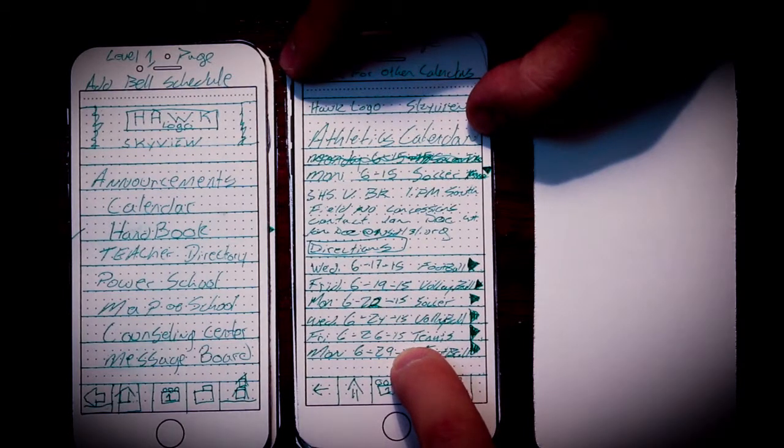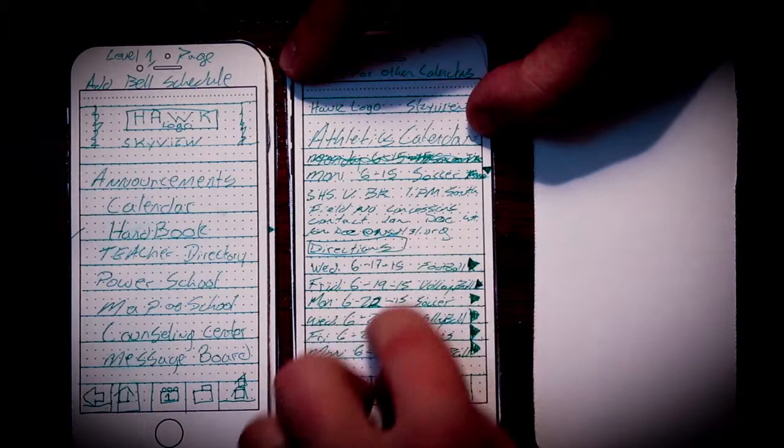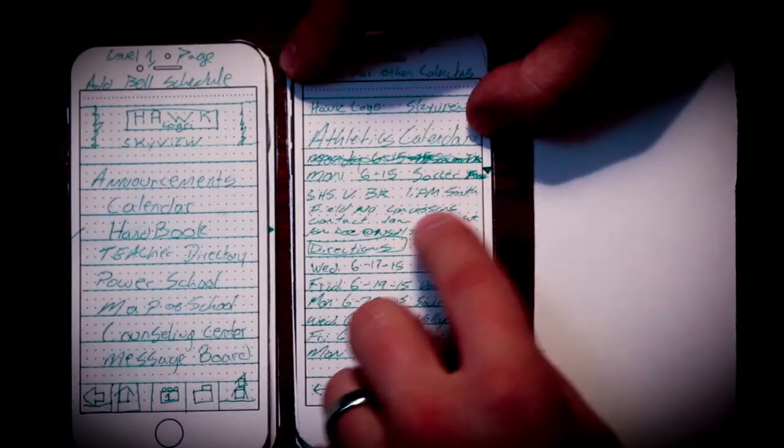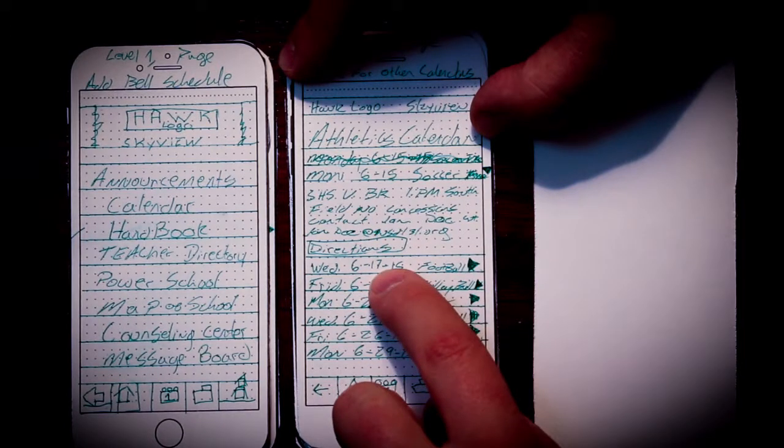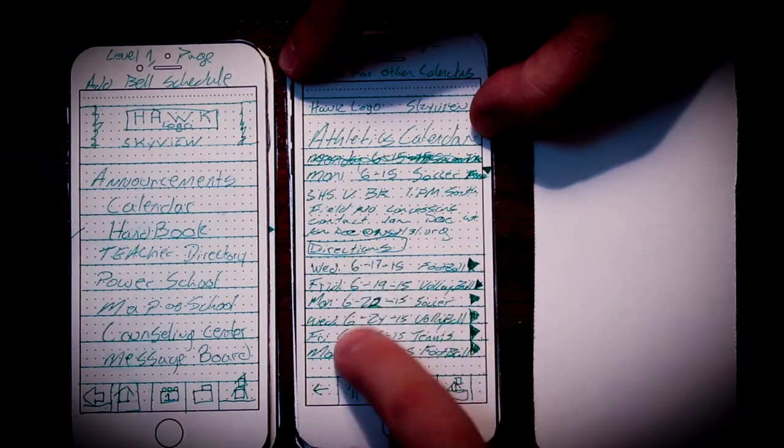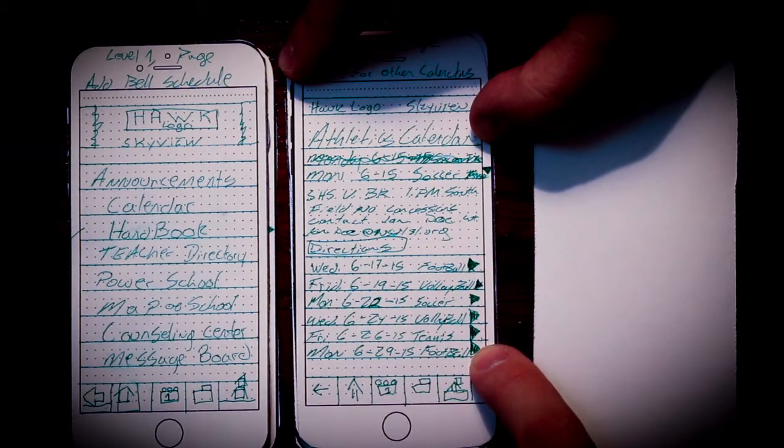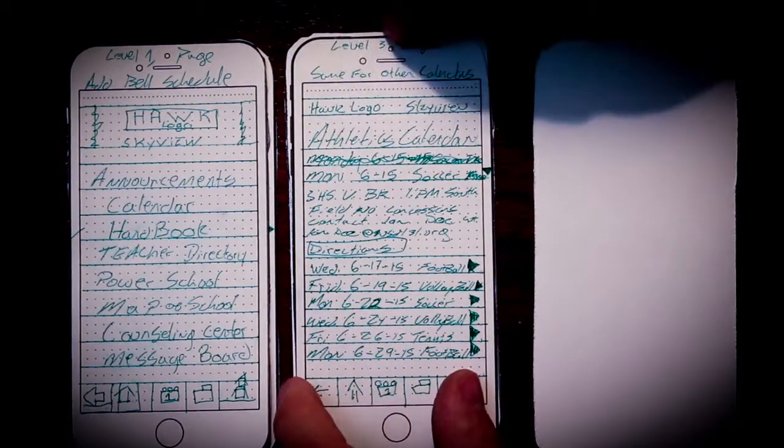The first one I ran into a problem because I tried to do it like I did the announcements page, where it just kind of kept the current one at the top. But athletics actually has to go in reverse. So we start at 6-15, 17, 19, 20, 24, 26, with down the side the days of the week, arrows to open those up to read the details, and then buttons down here at the bottom. So this would be a level 3 page.